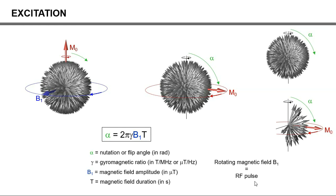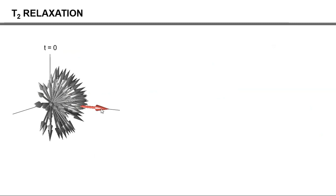So, we have excited our magnetization in the transverse plane, and our net magnetization M0 is along the y-axis. Of course, it is not going to stay there forever. We already know from the previous video that T1 relaxation leads to the build-up of magnetization along the z-axis.